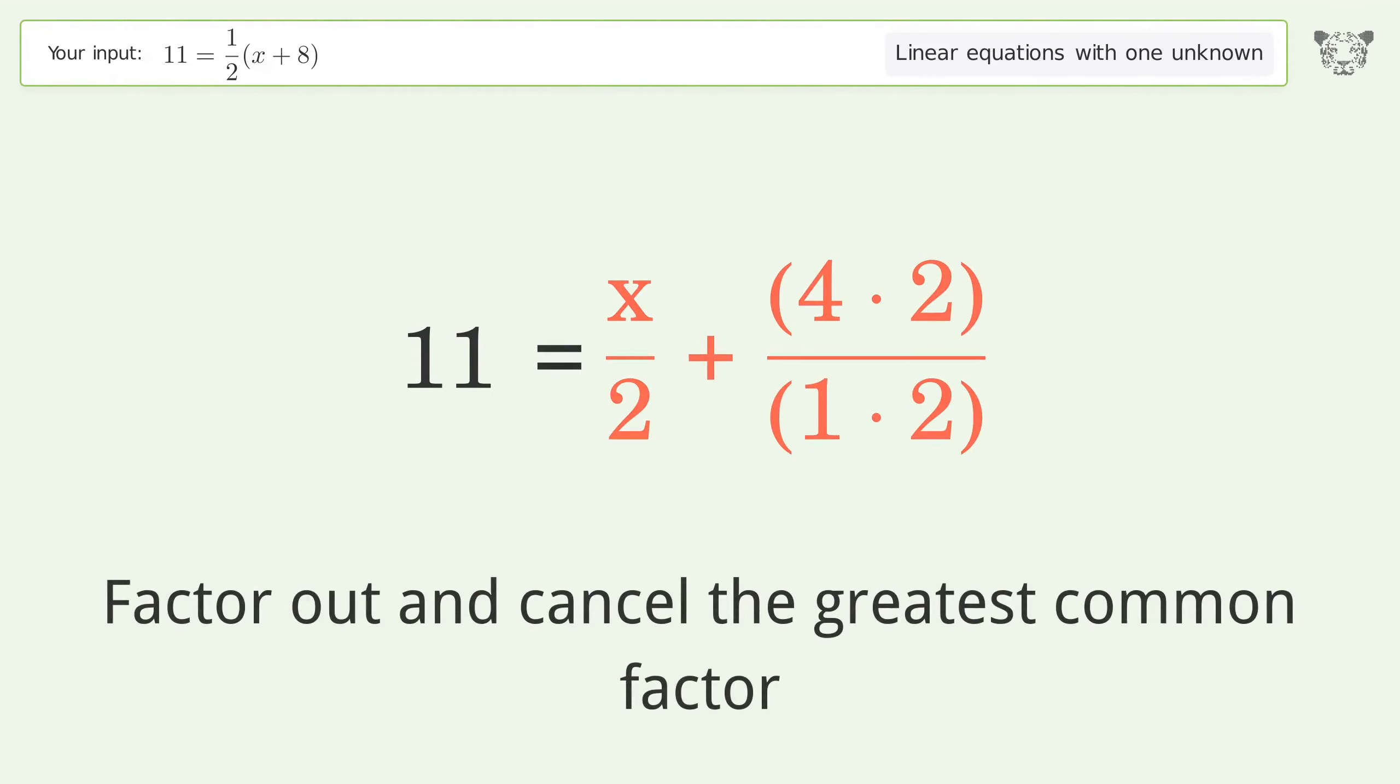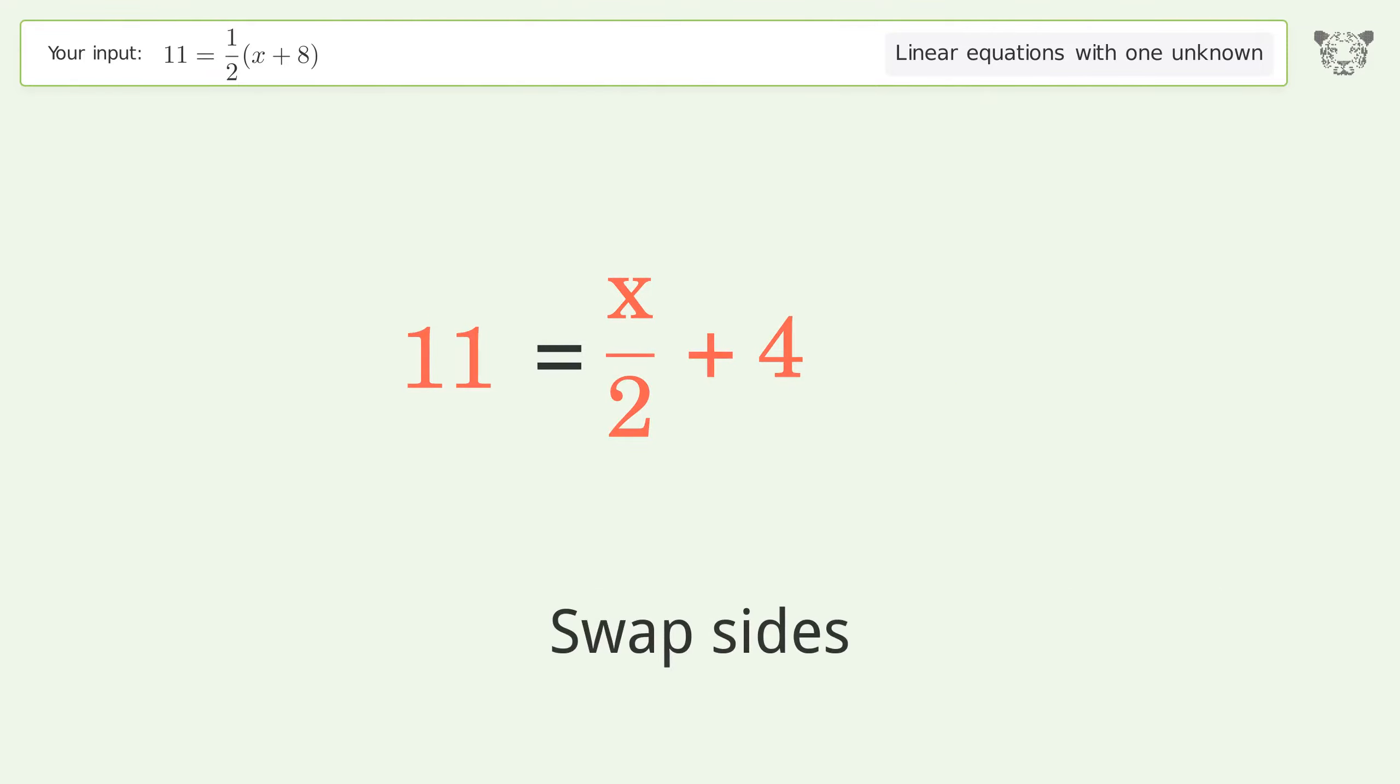Factor out and cancel the greatest common factor of the numerator and denominator, then swap sides.